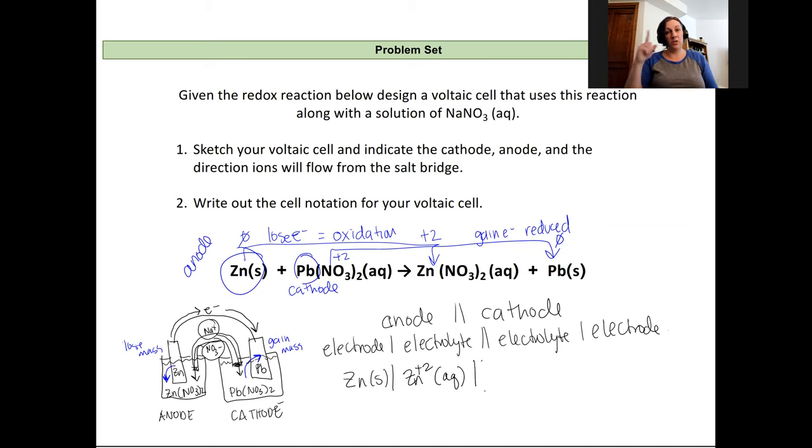Then we have our salt bridge, which will be the double lines, followed by our lead plus two electrolyte. I'll put the phase. And then we'll finish with the electrode on our cathode side, which is the lead solid.